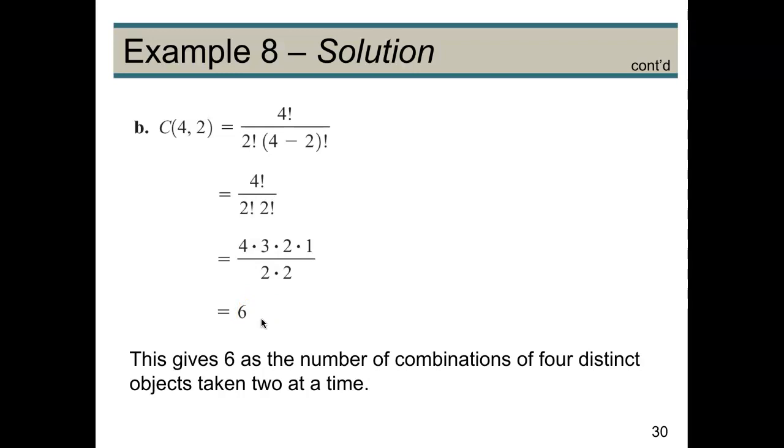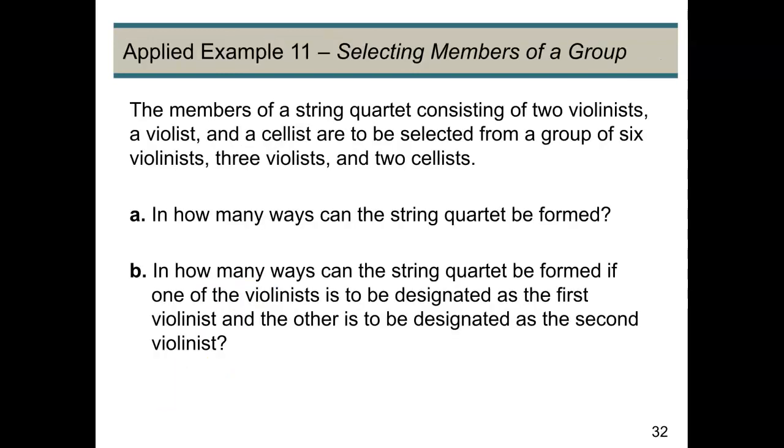And our result here means that the number of combinations of four distinct objects taken two at a time is six. So let's look at this next example. We have the members of a string quartet consisting of two violinists, a violist, and a cellist, and they are to be selected from a group of six violinists, three violists, and two cellists. We want to know how many ways the string quartet can be formed.